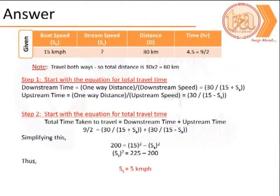We simplify to find the speed of the stream squared is 225 minus 200, that is 25, and therefore speed of the stream is 5 kilometers per hour.